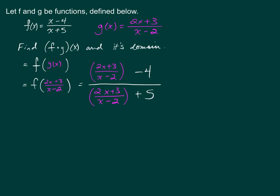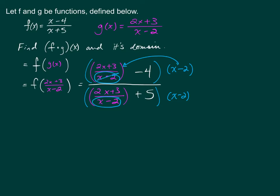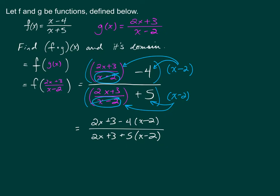What we can do here is multiply the top and bottom by the LCD, which is x minus 2. So I am going to multiply the entire fraction by x minus 2 in the top and bottom. When you distribute this x minus 2 here, it cancels, but you also have to distribute the x minus 2 to the negative 4. The same thing happens in the denominator — the denominator goes away, but you still have to multiply it to that 5. The new fraction will be 2x plus 3 minus 4 times (x minus 2), over 2x plus 3 plus 5 times (x minus 2).